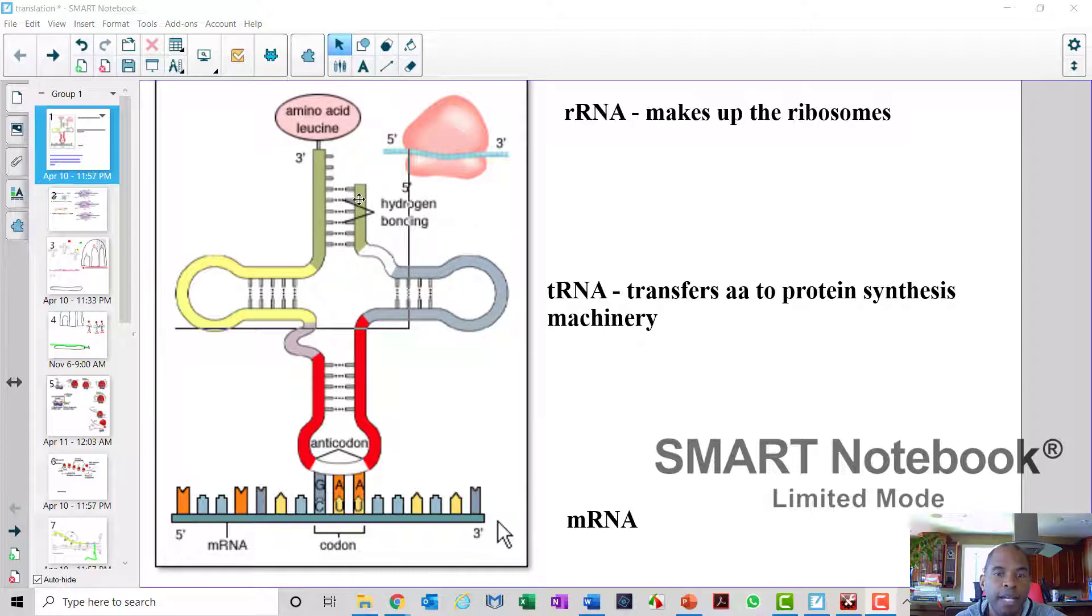On the 5' end, you'll notice that it's a little shorter than the 3' end. It has these very distinctive arms. And then on the bottom, the part that's interacting with the mRNA, we have a very important sequence known as the anticodon.